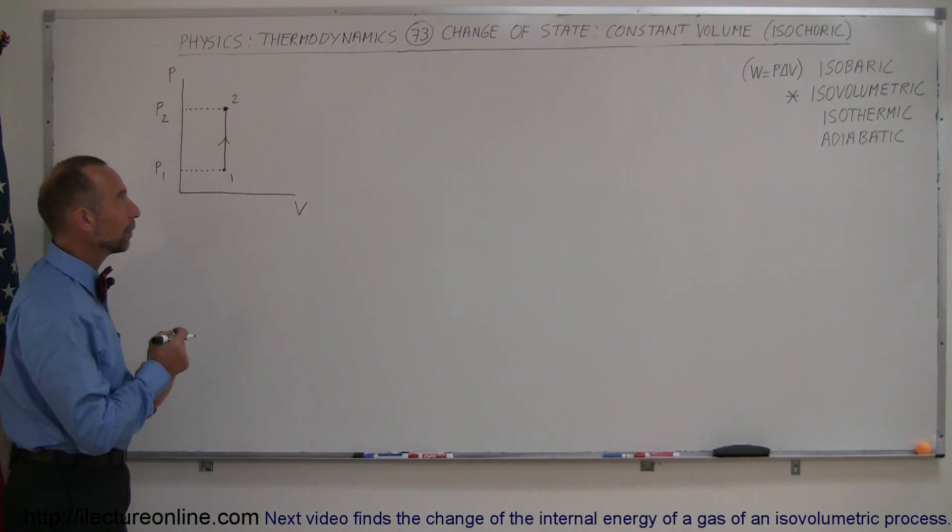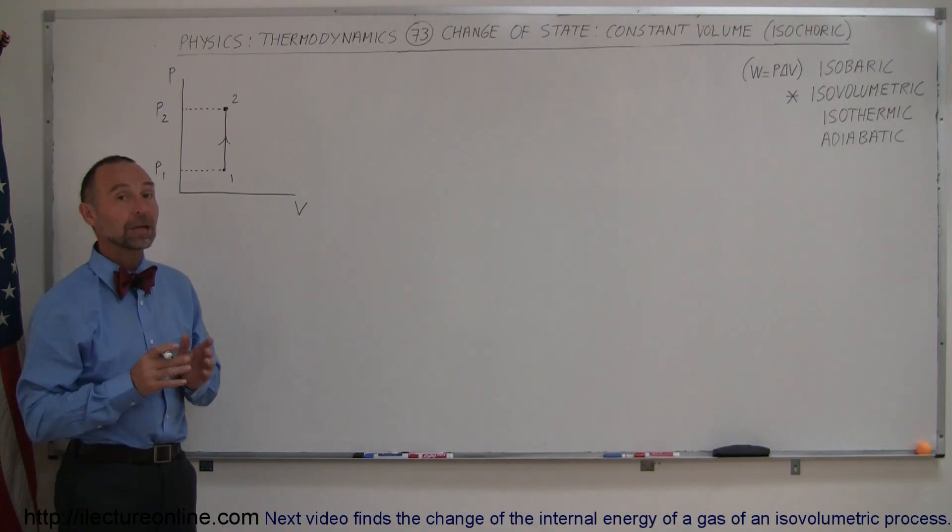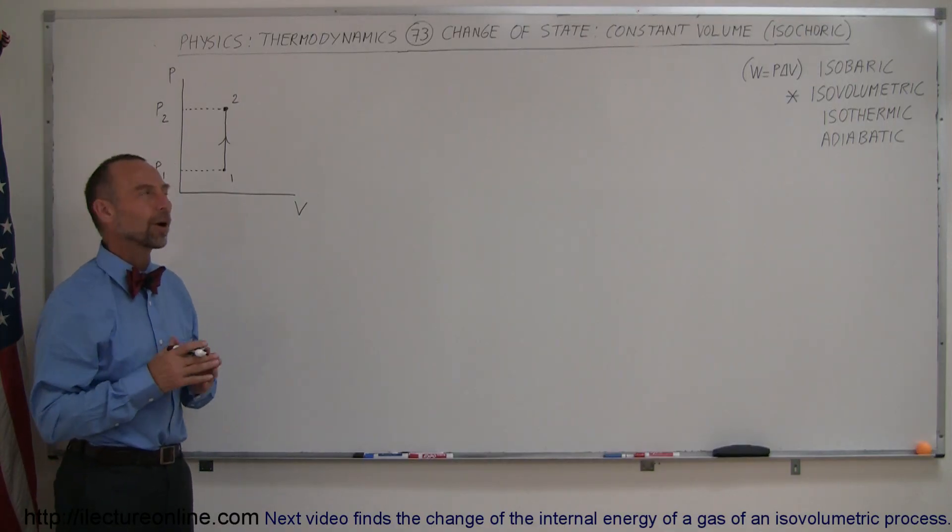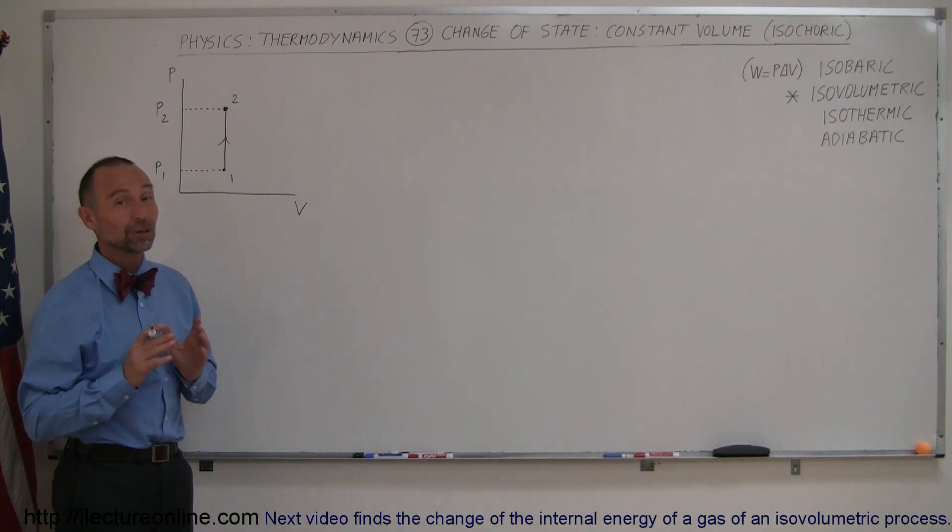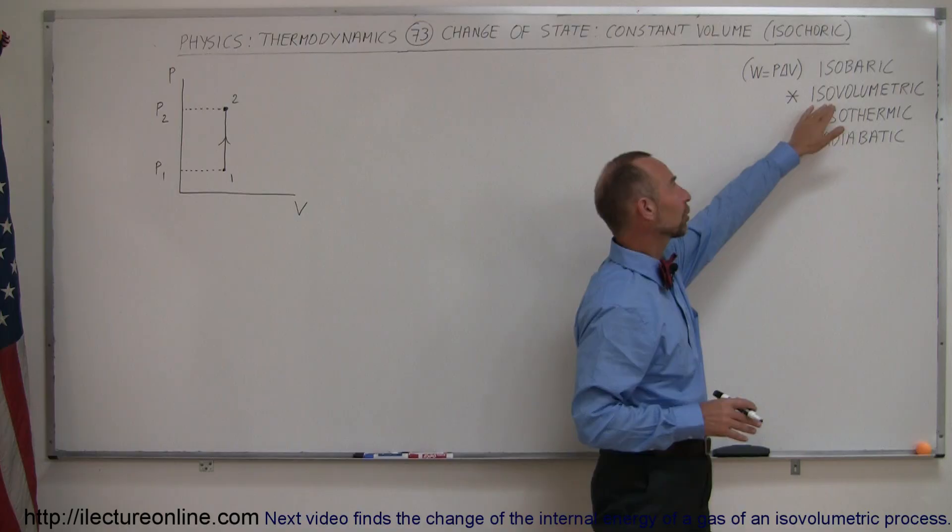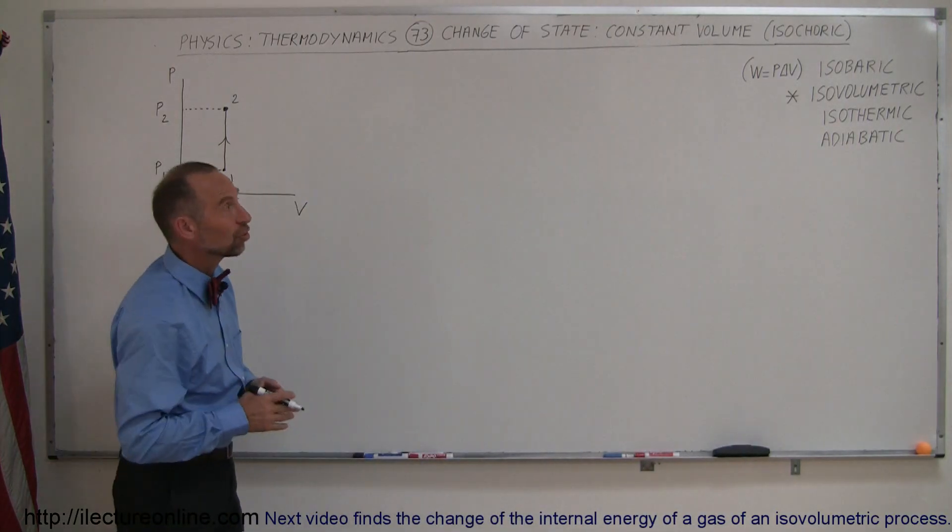And here's our next example with a thermodynamic process. In this case, we're not keeping the pressure the same. We're not going to keep the volume the same. And that's called an isochoric process. Now, isochoric is a term you're not going to see in many books anymore. That's kind of an old term. They typically call it isovolumetric, meaning single volume - volume doesn't change.